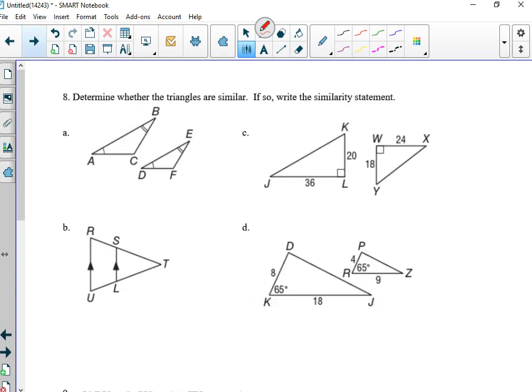Okay. Number 8. Determine whether they are similar, and if so, write the similarity statement. Well, A and D correspond and B and E correspond. We only need two angles. So triangle ABC is similar to triangle DEF by AA similarity.